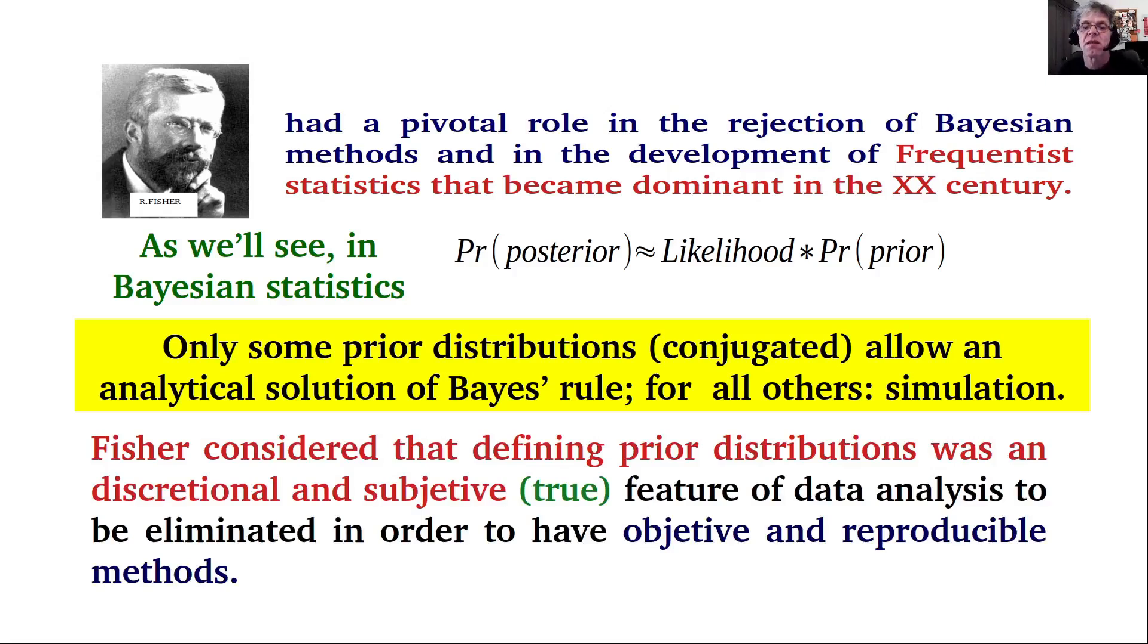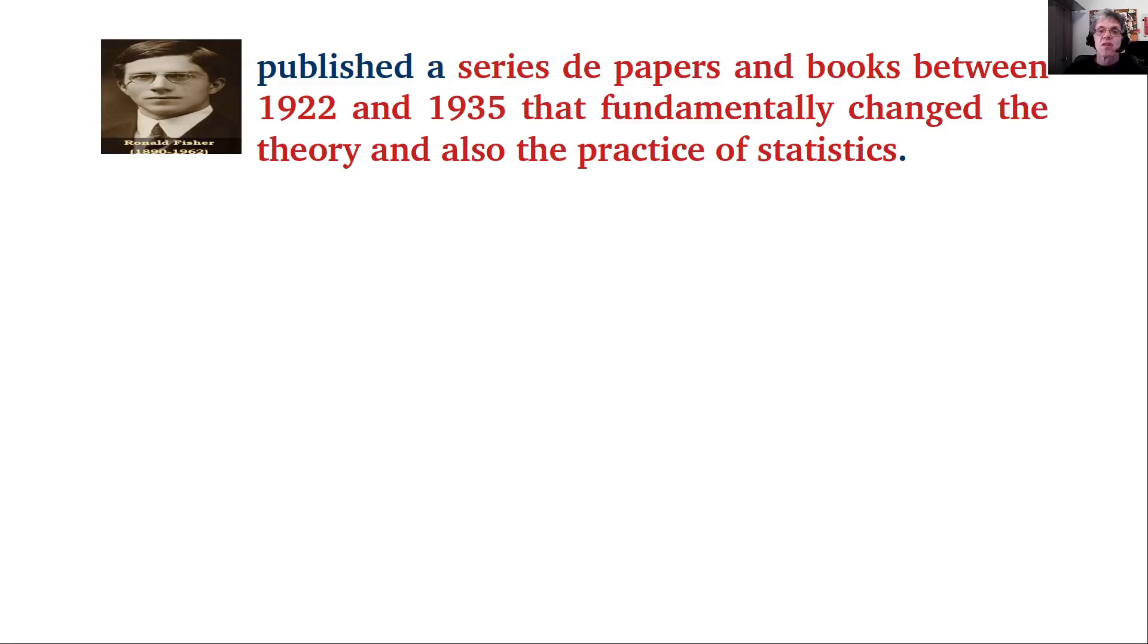Fisher considered that defining prior distributions was discretionary and subjective, which is true, a feature of data analysis that had to be eliminated to provide objective and reproducible methods of data analysis. He devoted an enormous amount of energy to produce a series of landmark papers between the 1920s and 1930s that fundamentally changed the theory and practice of statistics. Regardless of your viewpoint on whether you favor frequentist or Bayesian statistics, Fisher can certainly be called the equivalent of Newton in statistics. That is, there is statistics before Fisher and statistics after Fisher.